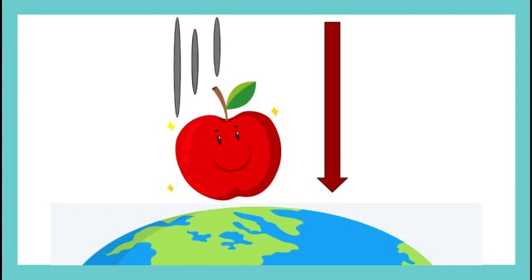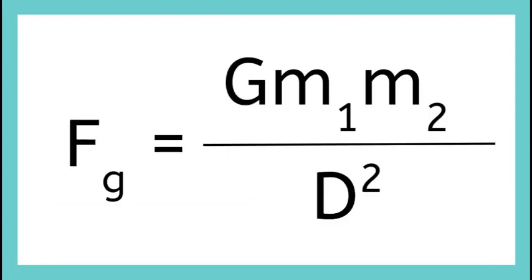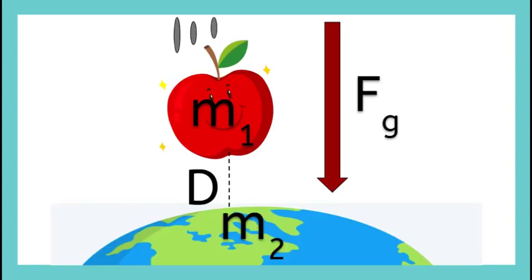This is the equation that describes the attraction between two objects with mass that are at some distance apart. It's called the law of universal gravitation. If we go back to this example of gravity with the apple...